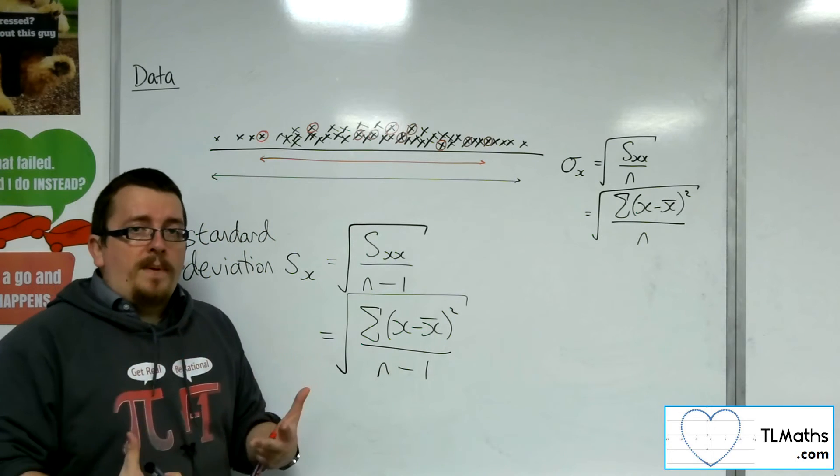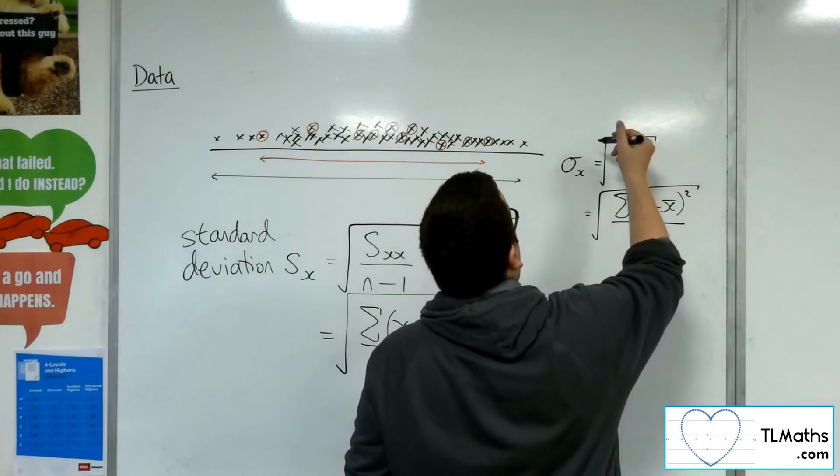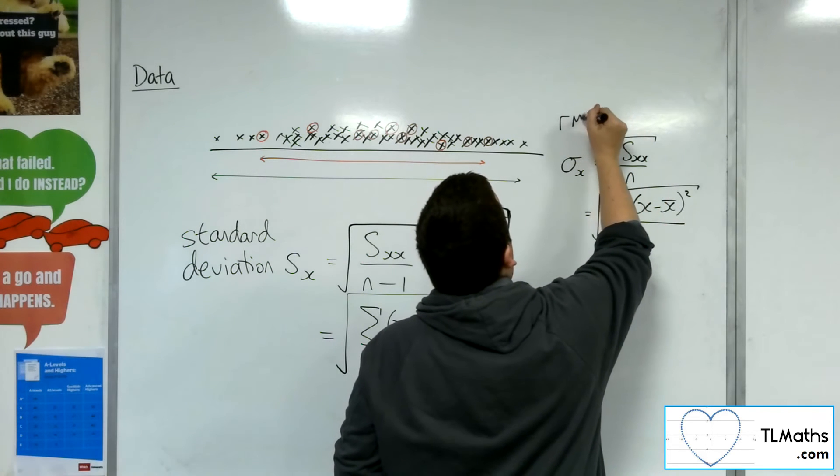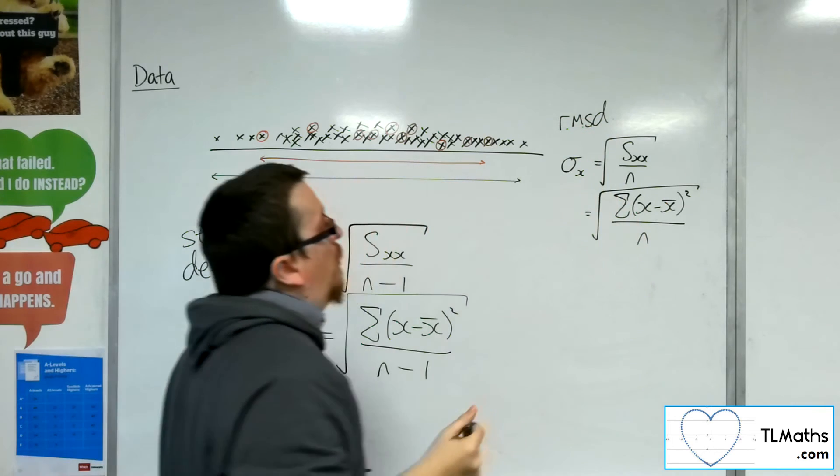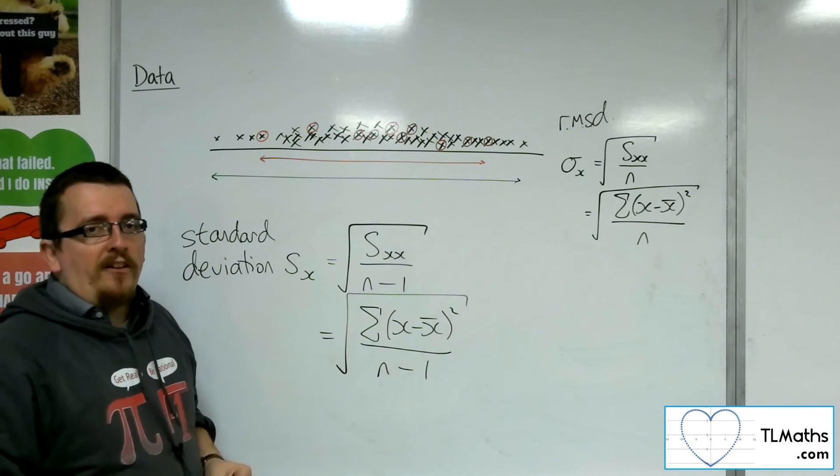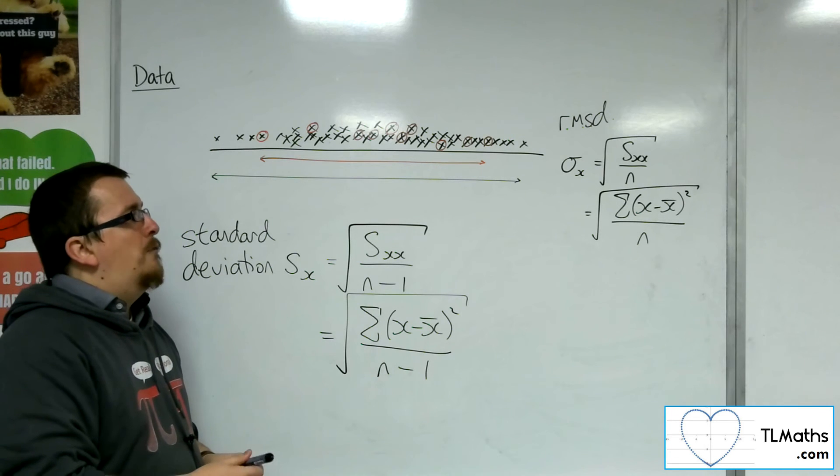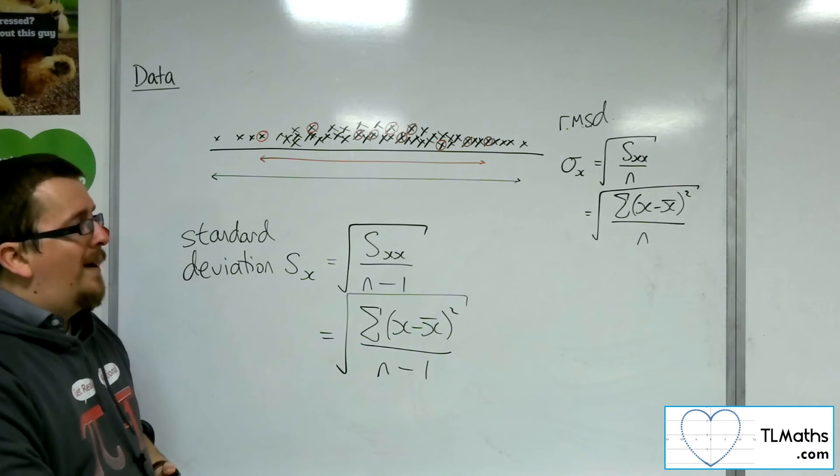This used to be called, but it's no longer on the spec, the root mean square deviation, or RMSD, which if you're learning OCR-MEI, you may see somewhere in textbooks. That would be the root mean square deviation, dividing by n.